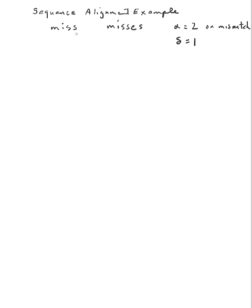The two words I'd like to align are 'miss' and 'misses'. I'm going to have the gap cost be one — that's what it would cost to insert a gap in either one of the two words. Alpha will be zero if the letters correspond completely, and two if there's any kind of mismatch at all.